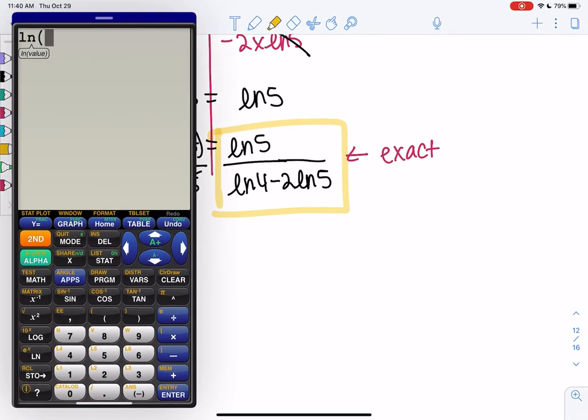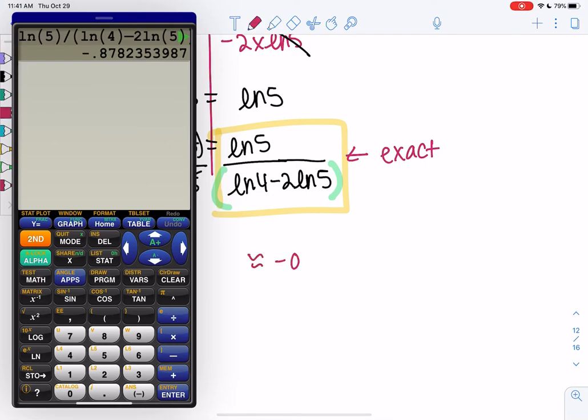So I'll do ln of 5 divided by, and then you can do everything at once if you put parentheses on that ugly denominator, parentheses ln 4 minus 2 ln 5. So approximately it's negative 0.878.